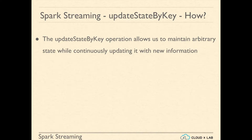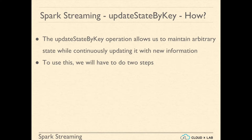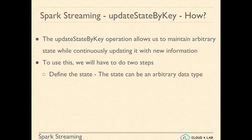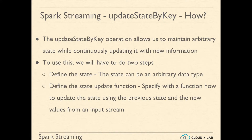The UpdateStateByKey operation allows us to maintain arbitrary state while continuously updating it with new information. To use this, we will have to do two steps. First, define the state — the state can be an arbitrary data type. Then specify a state update function to specify how to update the state using the previous state and the new values from an input stream.